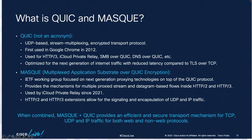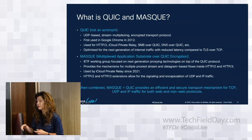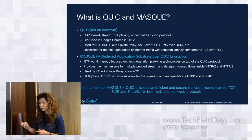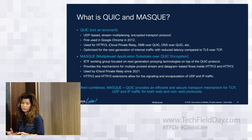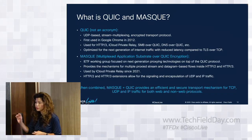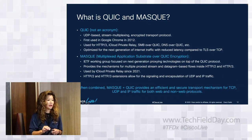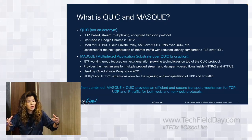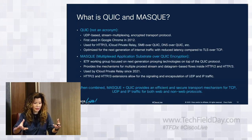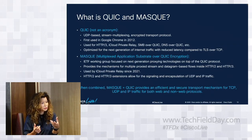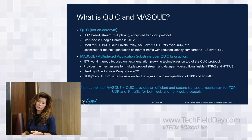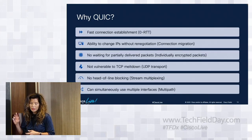The combination of MASK and QUIC provides an efficient, secure transport mechanism supporting all ports and protocols — TCP, UDP, IP — for both web and non-web traffic. You can tunnel all of that traffic without using the traditional VPN method, which is device-encompassing and involves routing table changes. With MASK and QUIC, you don't have to do any of that.